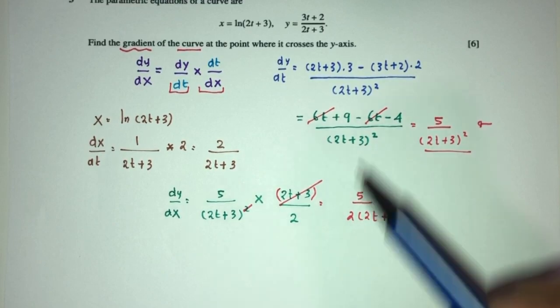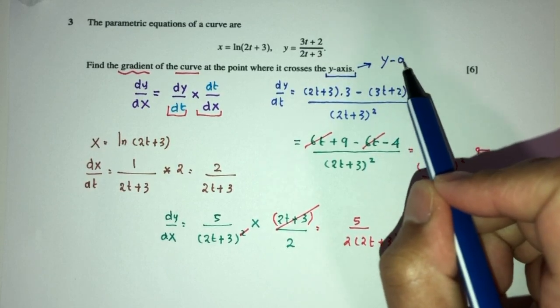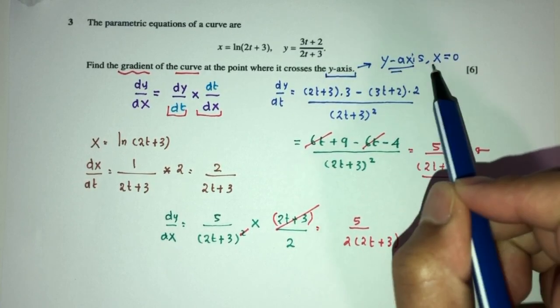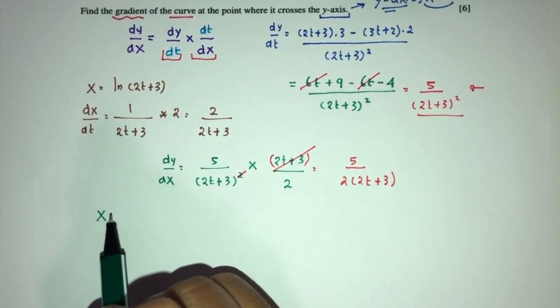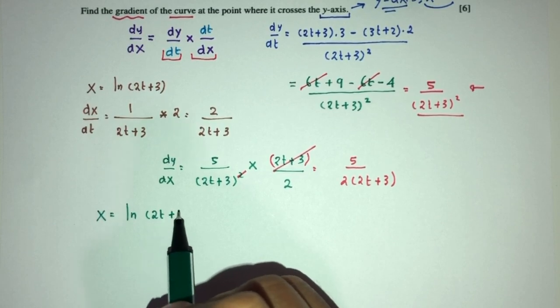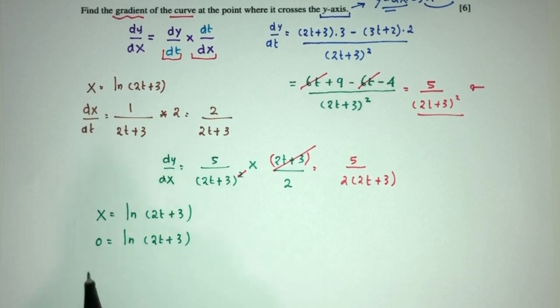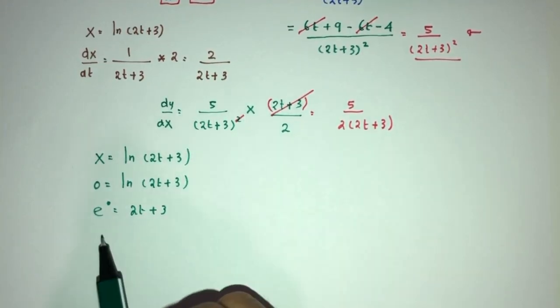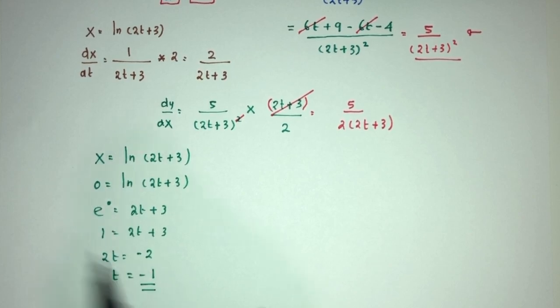Now, we have to find the value of this when it crosses the y-axis. Okay? Now, we should know at y-axis what happens. x is 0. So, at y-axis, x will always be 0. So, which means, I know x has been given to you by this equation: ln(2t + 3). Now, if this is 0, what is the value of t? So, let's solve for the value of t. That will be e⁰ is equal to 2t + 3. Now, anything power 0 is 1. That will be 1 equal to 2t + 3. So, 2t will be the value of 1 - 3. It should be -2. t will be just -1. There you go.